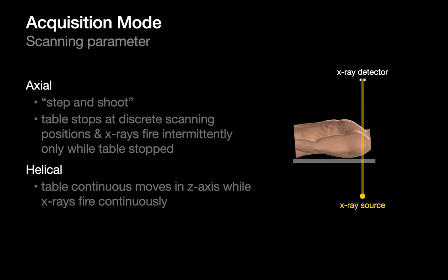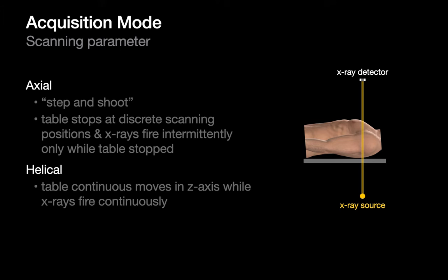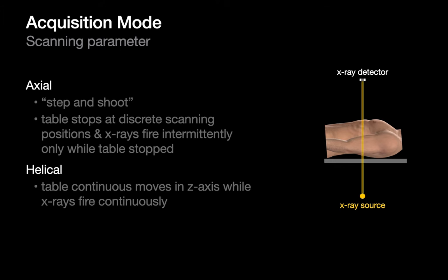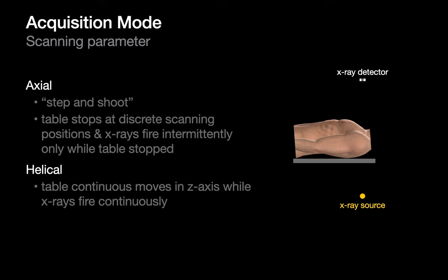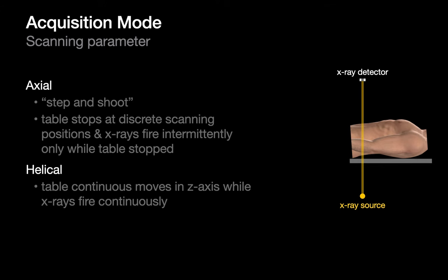The acquisition mode refers to how the CT volume is captured from start to end point. One option is axial (step-and-shoot) acquisition — the earliest method — where the tube turns on, a gantry rotation occurs at one spot, the table moves an increment, and the process repeats until the region is covered. The other option is helical (spiral) acquisition, used for most CT scans today, where the tube remains on as the gantry constantly rotates while the table smoothly moves from start to end point, painting a tight continuous spiral.